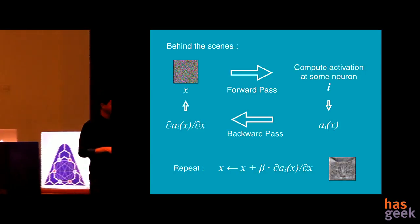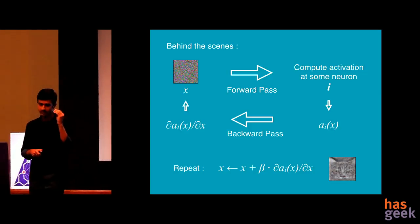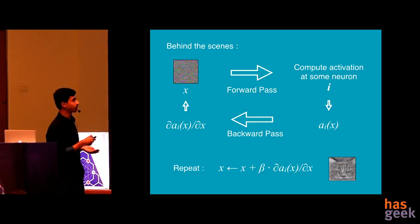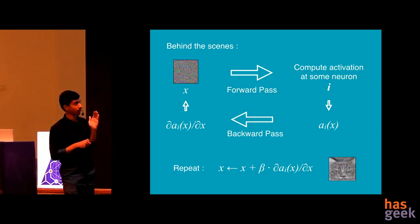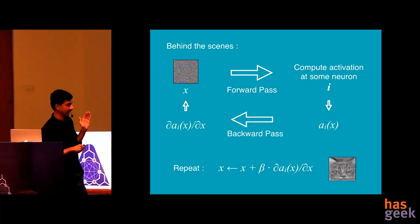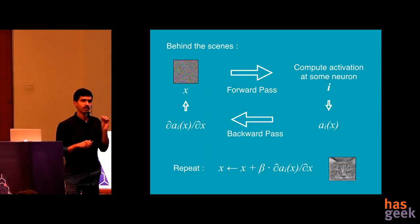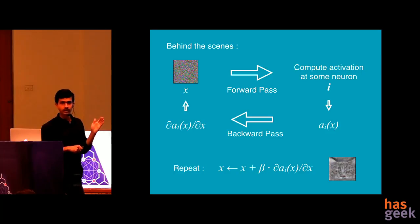So what happens is essentially to get this final neuron, the picture where the visualization of what sort of features actually activate the neuron maximally, you do a forward pass, you compute an activation at a particular neuron. This is a random static image. There's nothing involved in this random static that you get in your TV. You do a forward pass at a particular neuron I, you get the activation value and you do a backward pass, get the gradient. So here the gradient is essentially by what values should you change each pixel's color so that this activation is maximum.